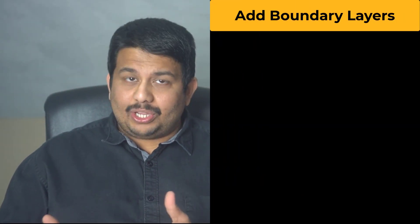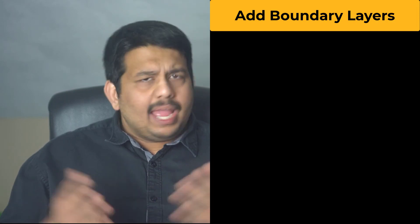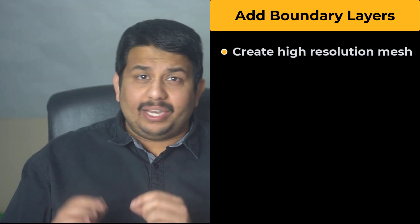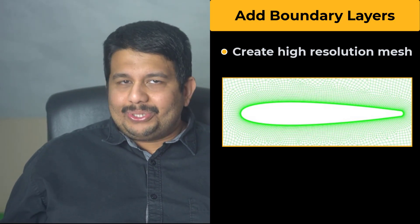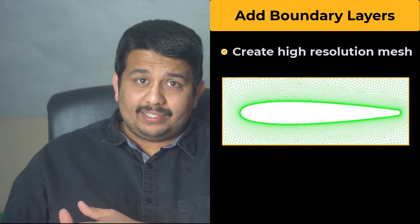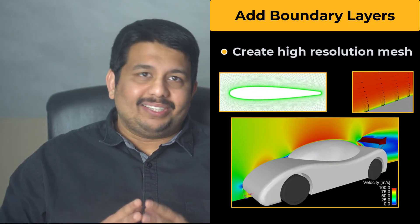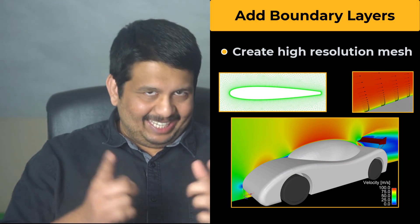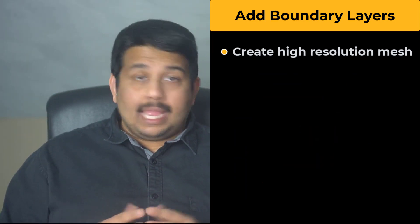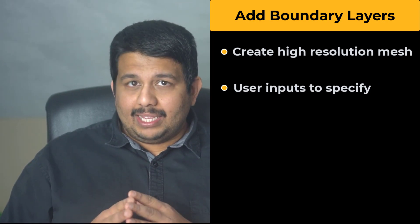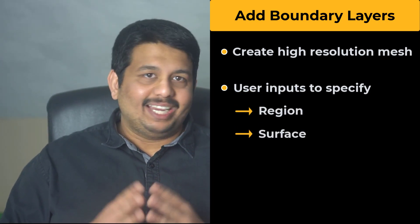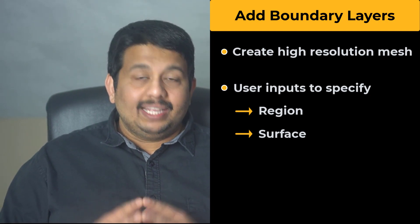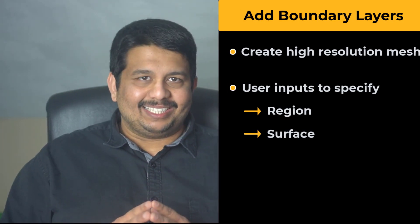The Add Boundary Layers task of the Watertight Geometry workflow allows you to create high-resolution mesh near selected surfaces, which can be used to capture flow property gradients, especially near wall surfaces, when performing a CFD simulation. Among the user inputs required in this task are the region and the surface on which the Boundary Layer Mesh needs to be generated. This is the focus of this lesson. Let's get started.